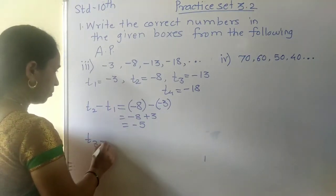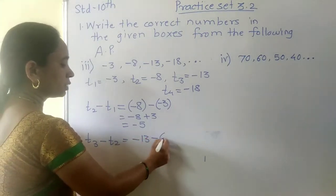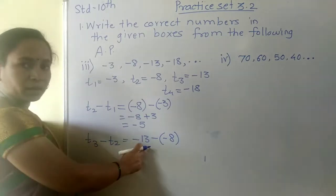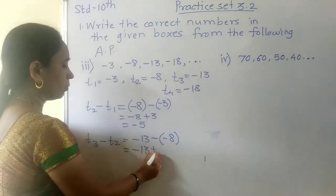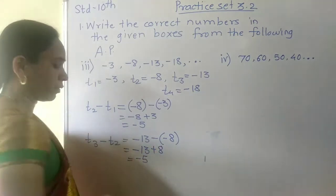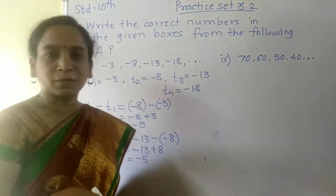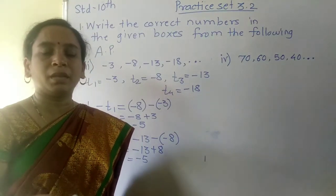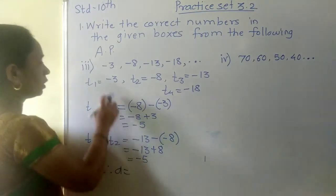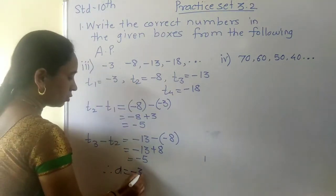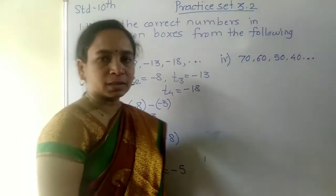T3 minus T2 is also -5. So D is constant. A's value is the first term, which is -3, and D equals -5. Next example — the sequence is also in decreasing order: 70, 60, 50, 40. T1 equals 70, T2 equals 60, T3 equals 50, T4 equals 40. T2 minus T1 equals 60 minus 70 equals -10. T3 minus T2 equals 50 minus 60 equals -10. So A equals 70 and D equals -10.